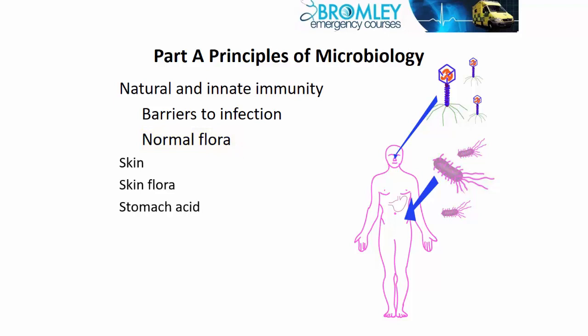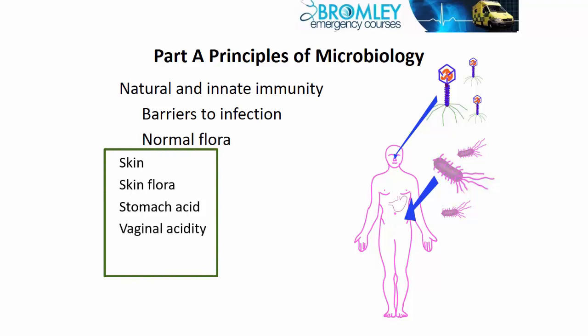Then you've got barriers — for example, stomach acid, vaginal acidity, urinary acidity — all of those prevent many bacteria from passing. So there are a number of physical barriers. And then, of course, there's things like IgA, immunoglobulin A, in tears, in the mouth, in breast milk secretions, and in other secretions, which also prevents pathogenic bacteria getting access to the vulnerable parts of the body.